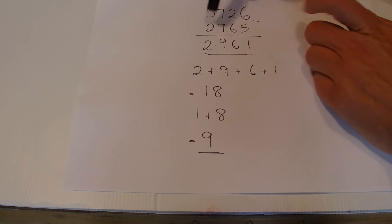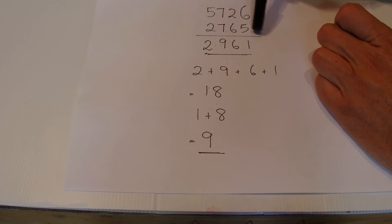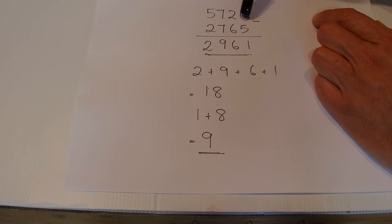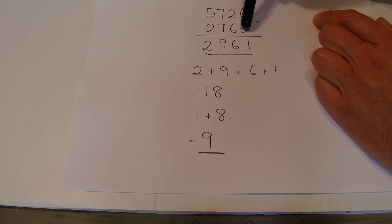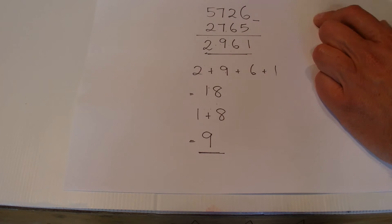With that number 5, 7, 2, 6, we're going to create another number with those same 4 digits, but just in a different order, so you can see 5, 5, 7, 7, 2, 2, 6 and 6.